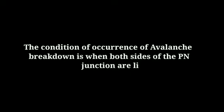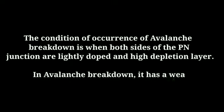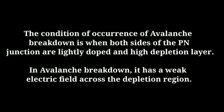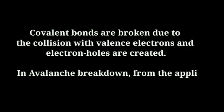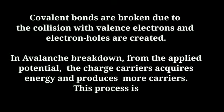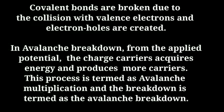Distinguish between zener breakdown and avalanche breakdown. In avalanche breakdown, the condition of occurrence is when both sides of the PN junction are lightly doped with a high depletion layer and a weak electric field across the depletion region. Covalent bonds are broken due to collision with valence electrons, creating electron-hole pairs. From the applied potential, charge carriers acquire energy and produce more carriers — this process is termed avalanche multiplication.